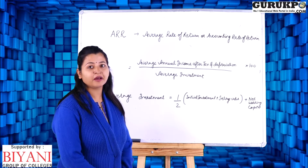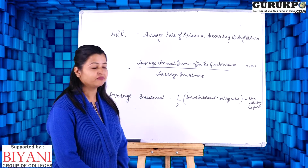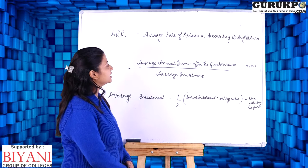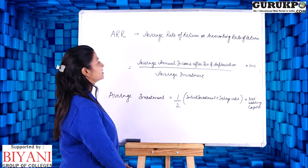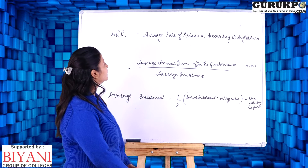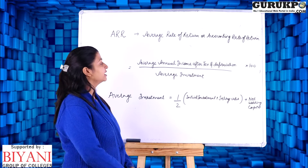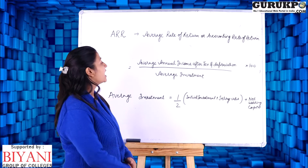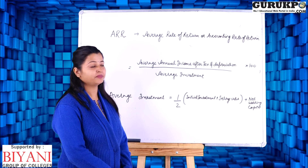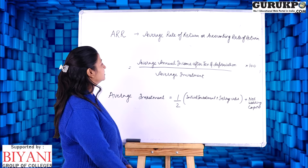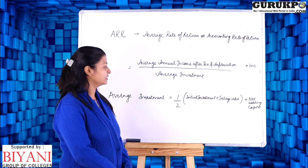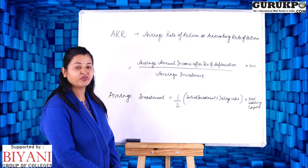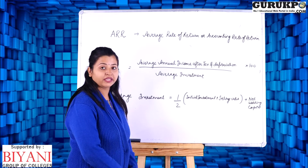ARR is a technique of capital budgeting used to measure the profitability of an investment proposal. To find average annual income, we first deduct depreciation from sales, then deduct tax, giving us annual income after tax and depreciation, divided by the number of years (estimated life), divided by average investment into 100. The formula for average investment is: half of (initial investment plus salvage value, i.e., scrap value, plus net working capital).